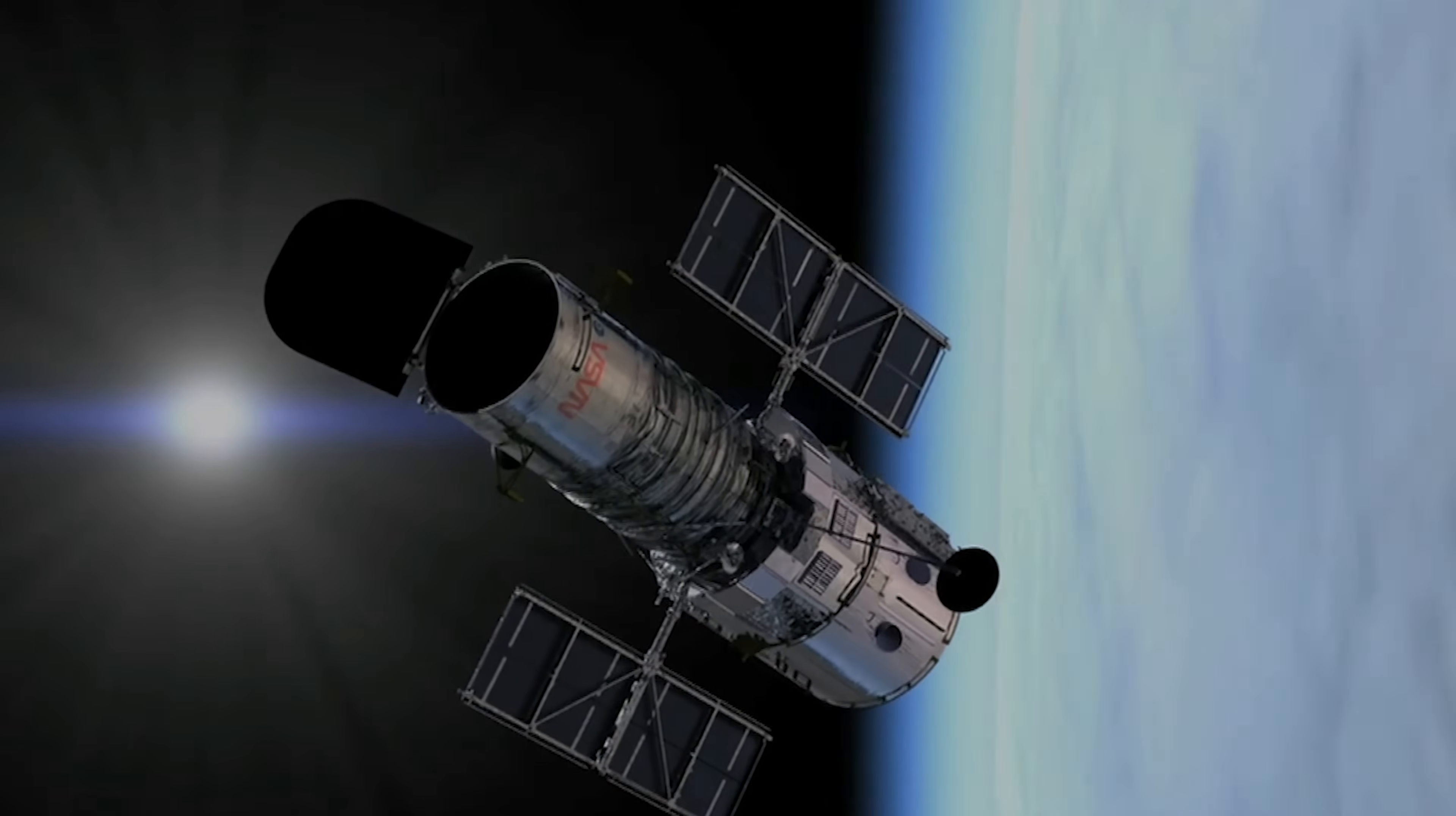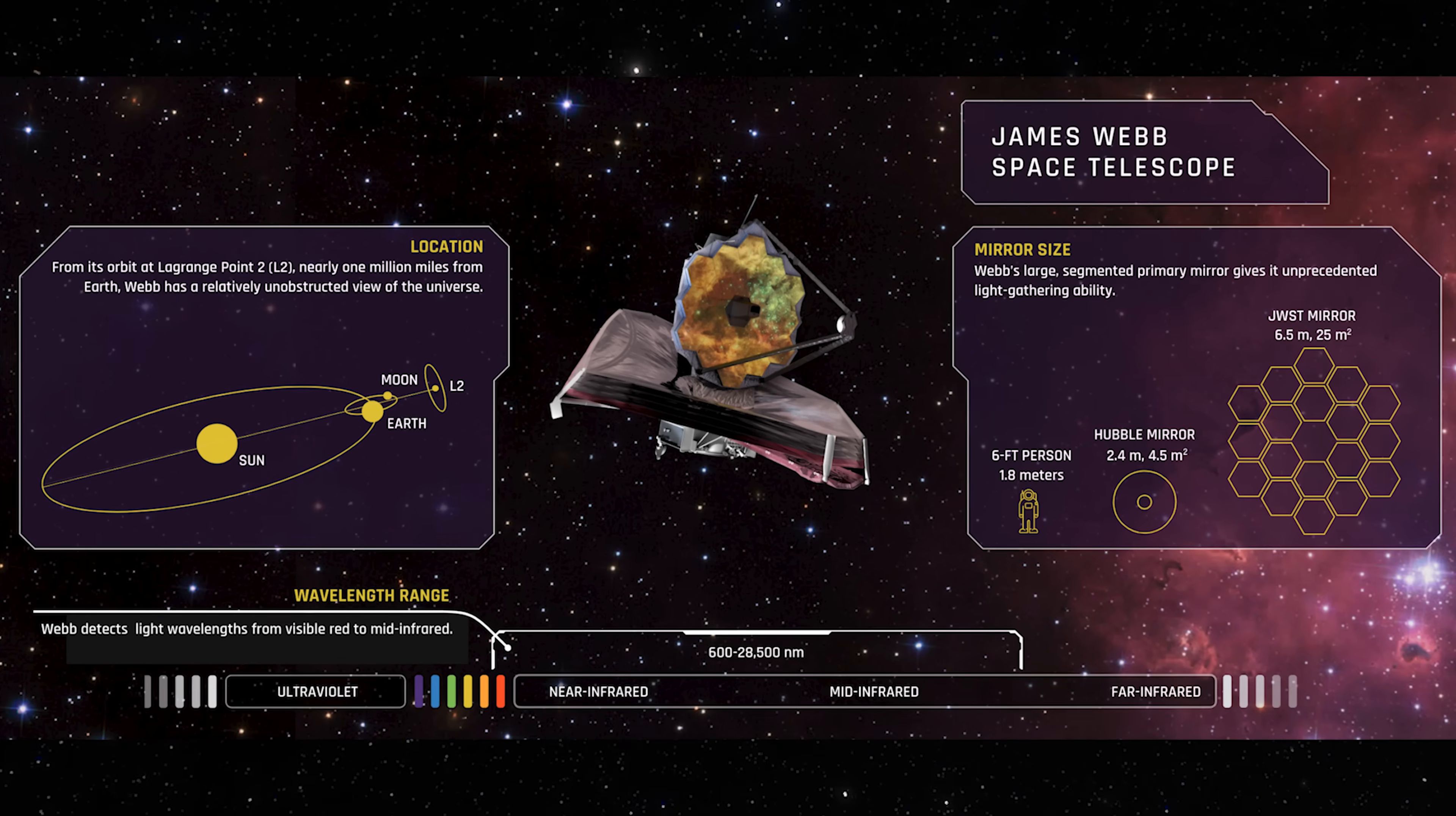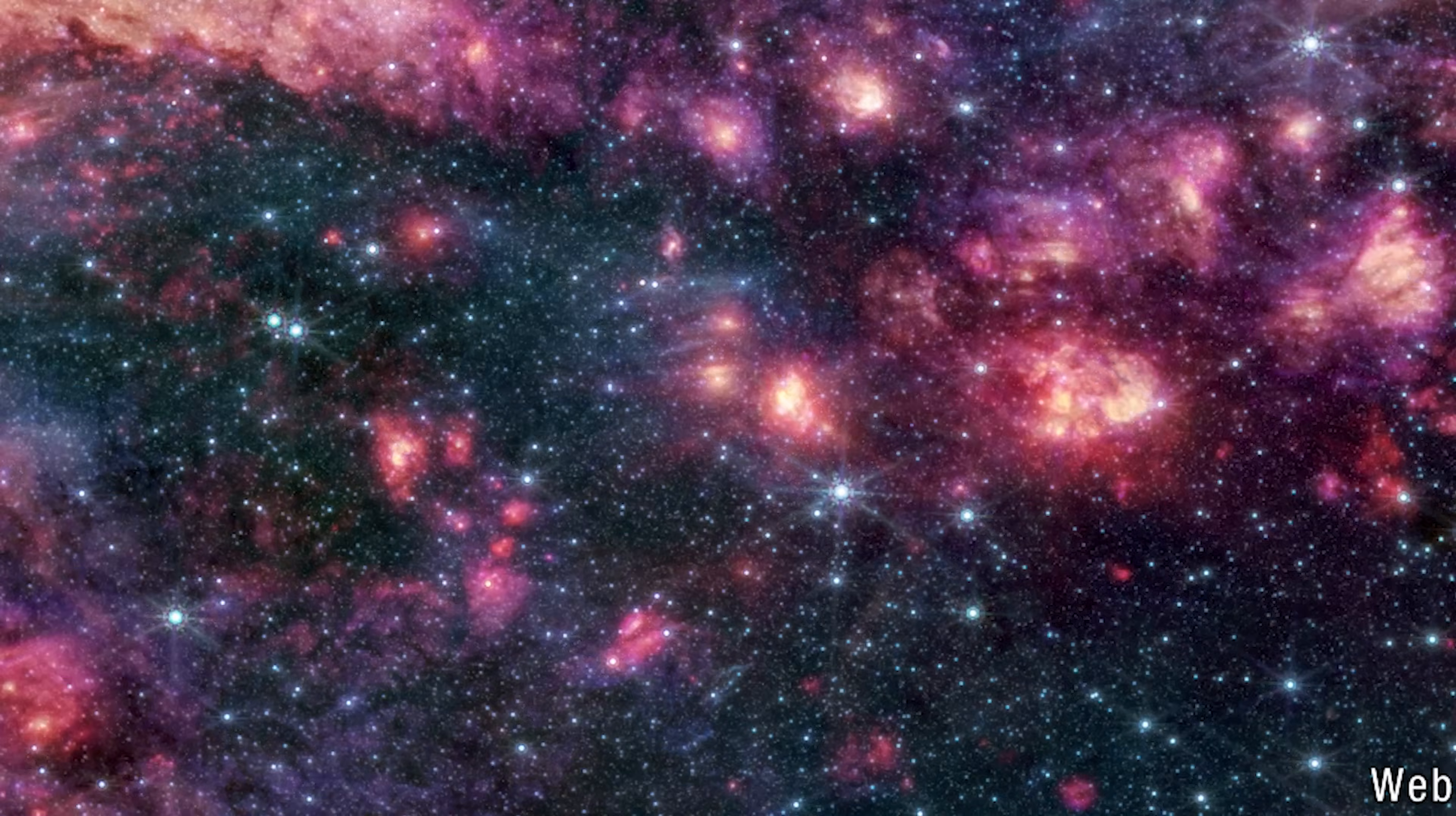But Hubble had limits. Then came the James Webb Space Telescope. With a massive 6.5-meter mirror and powerful infrared vision, Webb was designed for one purpose: to see the faint, stretched light from the universe's very first galaxies. And almost immediately, it began rewriting records.